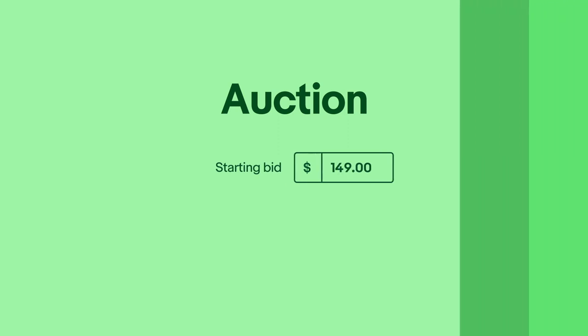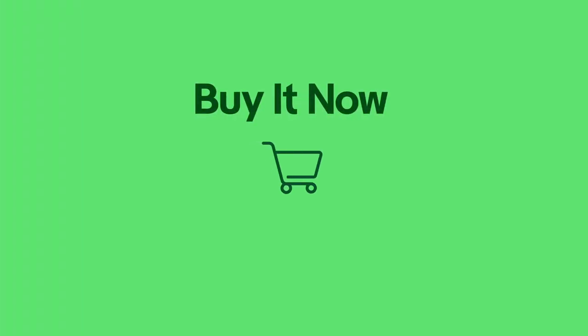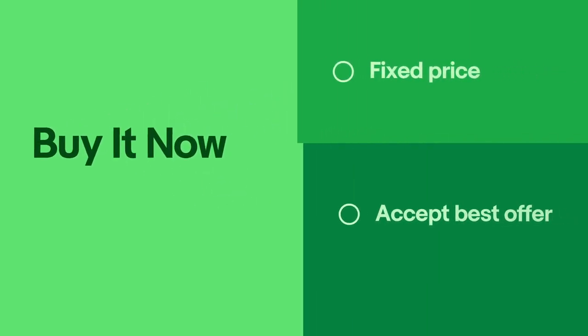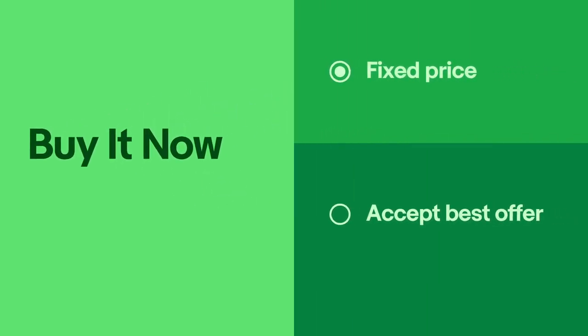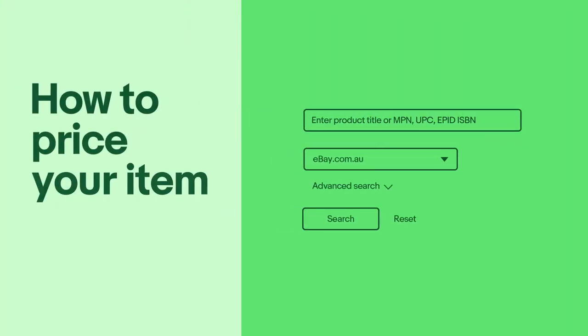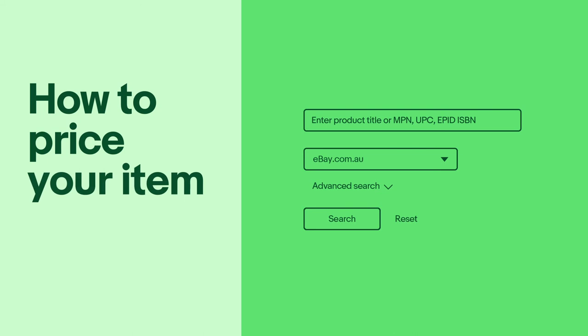The other option is buy it now, which is much more commonly used. With buy it now listings, you set a fixed price for your item. You can also choose to accept a best offer, which means a buyer can make an offer for your item that you can accept, decline, or counter. Buy it now listings are auto-renewed every 30 days, until sold or cancelled.